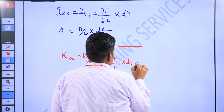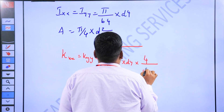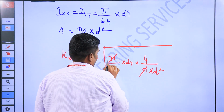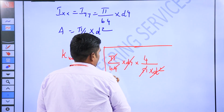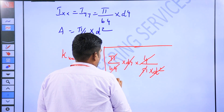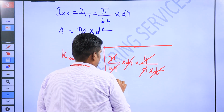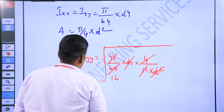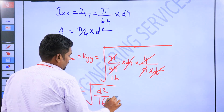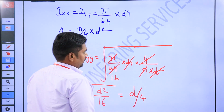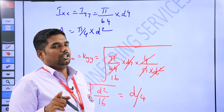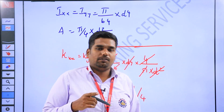Power 4. pi cancel, d power 4 divided by d squared cancel, and 64 divided by 4 cancel. So the result simplifies, and radius of gyration for the circle is d/4. That's why, radius of gyration for the circle — I'm going to show you.